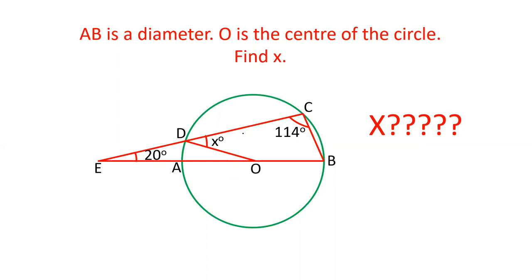In this video we are discussing a question where there are two secants EB and EC intersecting the circle at A, D, B and C. AB is the diameter. O is the center of the circle. We have to find out the value of X and let's see how we can solve this question.